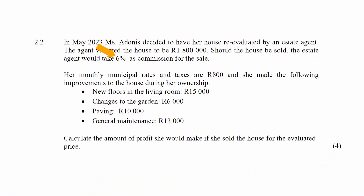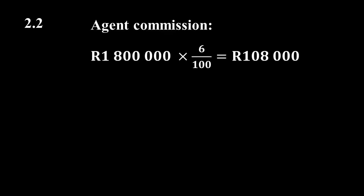To calculate the expense of the property, we start by calculating the commission that will need to be paid to the estate agent. That will be 6% as a fraction, which is 6 over 100, multiplied by the selling price of 1,800,000 Rand. This equals a commission of 108,000 Rand.